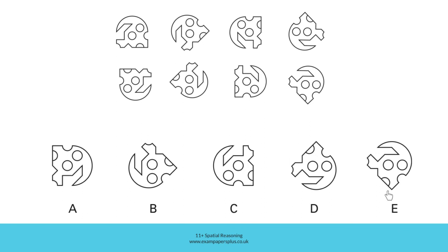E, however, is not a reflection. This is a rotated version of the original figure. You can see it represented here. All the features in E are correctly positioned with the right orientation and they all have the right relationship with one another. E, therefore, must be the right answer as it's the only answer option which does not represent a reflected version of the figure.